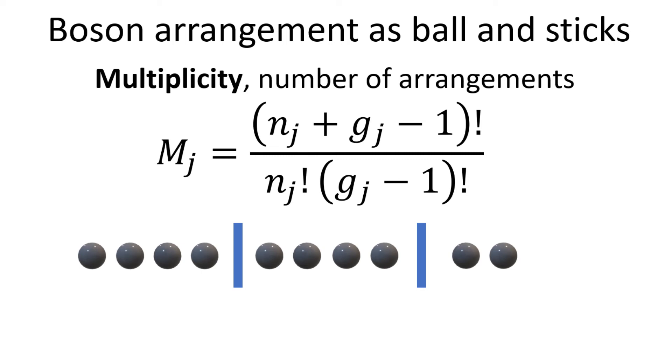The total number of balls and sticks is n plus g minus 1. Hence the multiplicity M is given by (n plus g minus 1) factorial, divided by n factorial, and divided by (g minus 1) factorial.